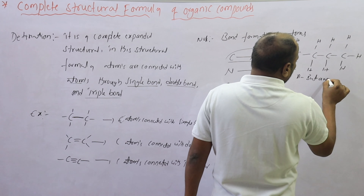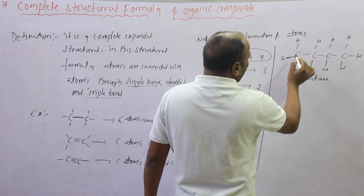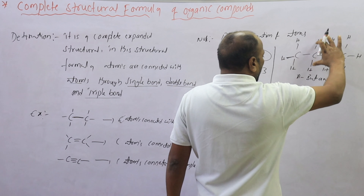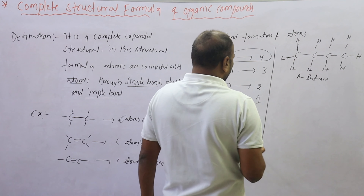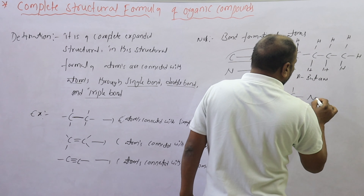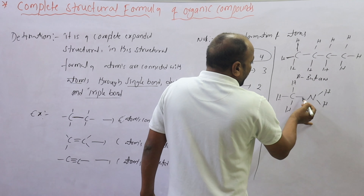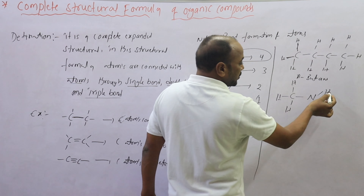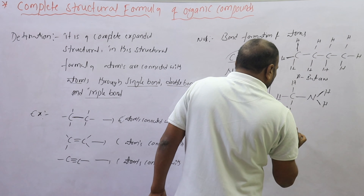The carbon atom has 4 bond formations. Here, one bond connects to another carbon atom and the other three bonds are connected to hydrogen atoms. In another example, two bonds are connected to carbon and the other two bonds are connected to hydrogen. So carbon atom has four bond formations and the hydrogen atom has only one bond formation. Nitrogen atom has three bond formations — one bond connected to the carbon atom and the other two bonds connected with hydrogen atoms.